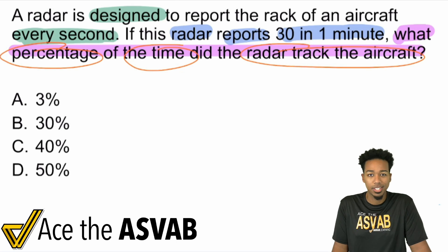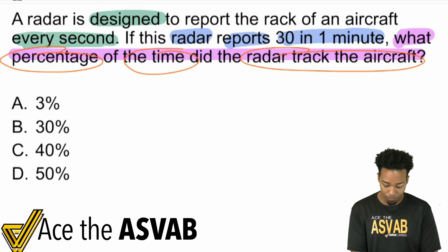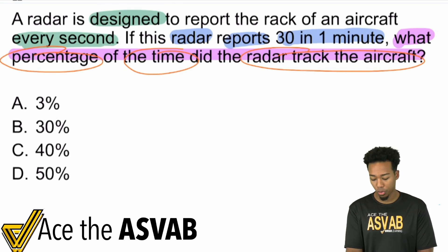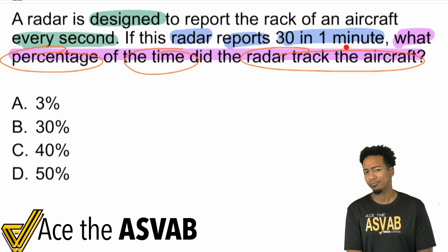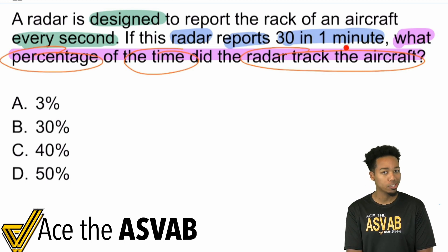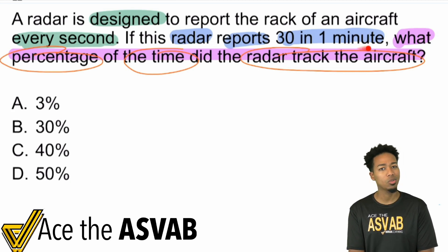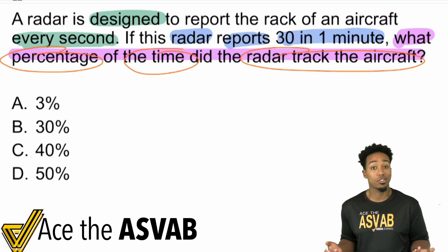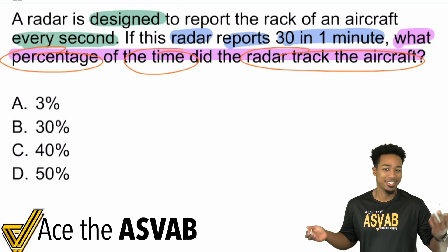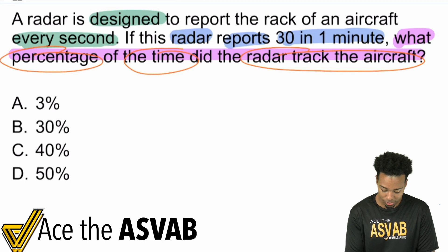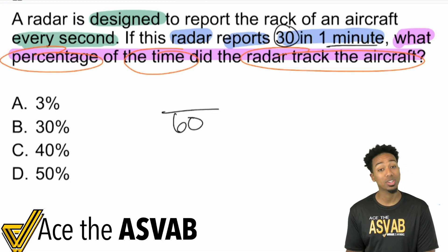If we're looking at this — it says it's designed to track every second, but the problem mentions one minute. We've got to make sure we're using the same unit. It reports every second — how many times does that mean in one minute? How many seconds are there in a minute? 60. So out of 60 seconds in a minute, it actually reported 30 times in one minute.